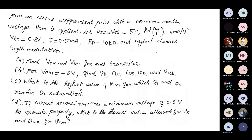We will start with overdrive voltage. We have KN dash W by L and the bias current given. We know the relation for overdrive voltage: it is the square root of I divided by KN dash W by L. Using this, you can find the overdrive voltage.